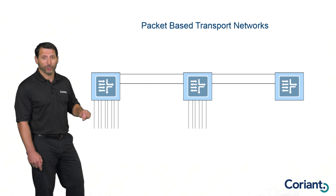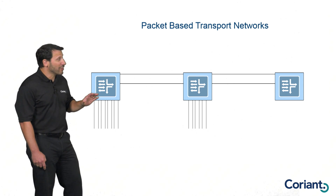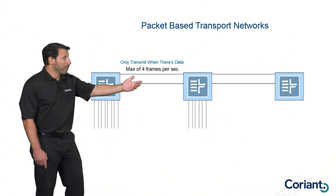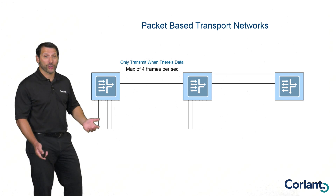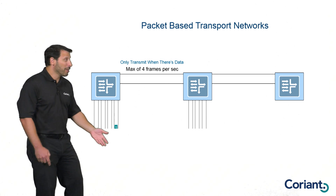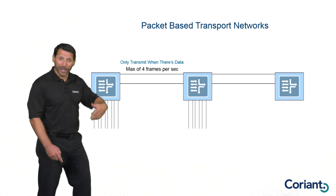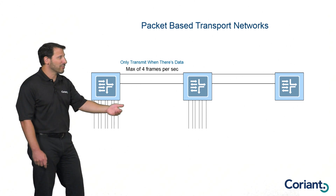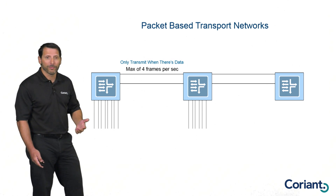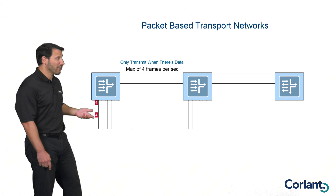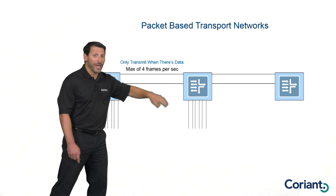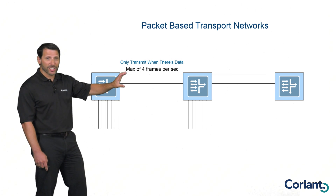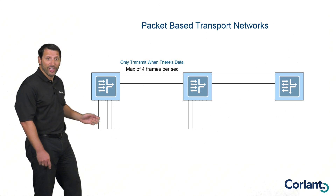Now let's take a look at packet-based transport networks, which look very different. The idea with packet-based networks is to only transmit information when there's information to transmit. If I have a pipe that can transmit four frames per second and there's nothing coming in, I'm not going to transmit anything. When a frame comes in, I'll transmit that frame, then wait for the next one. The real benefit here is that this bandwidth can now be accessible to any of these client-side interfaces at any rate. If I have a burst of traffic from one port — say three frames all at once — and nobody else is using this bandwidth, that bandwidth can be completely dedicated to that one service.